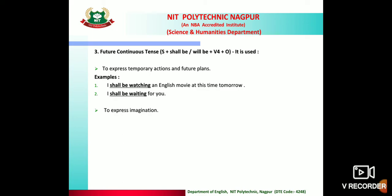Usage 2: to express imagination. For example: 'Radha will be dancing' — imagining that Radha will be dancing. 'Anu will be singing a song' — imagining that Anu will be singing. In both examples, we are imagining what Radha and Anu might be doing in the future.